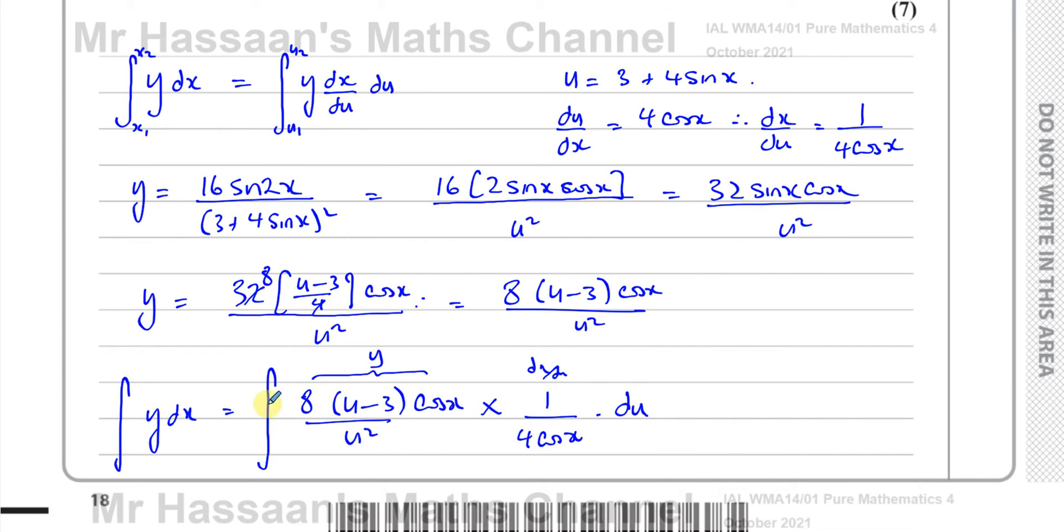dx/du is 1 over 4cosx. So this part is the dx/du part. And then I'm going to put du. And the cosx cancels out. The 4 and the 8 cancel out, leaving you with 2 there. So I've now got the integral of 2(u - 3)/u² du. So that's so far what I've got, which I'm going to deal with on the next page. But let me deal with these limits here.